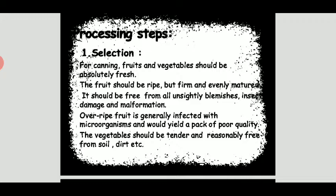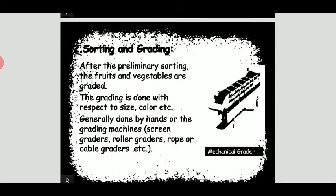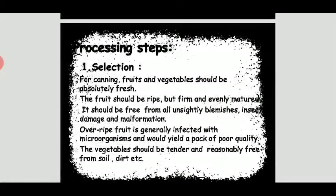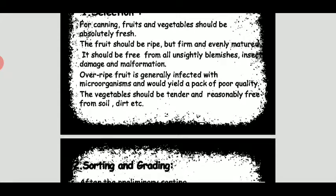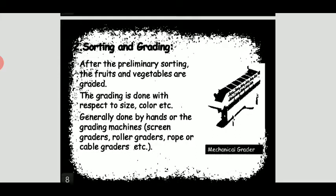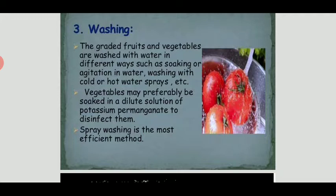This is the general canning flowchart. The first step is selection — fruits or vegetables should be absolutely fresh, ripened but firm and maturely ripe. Over-ripening leads to more enzymatic activity and microbial growth, reducing food quality. After selection, sorting and grading are done based on texture, size, and color of the fruits or vegetables.